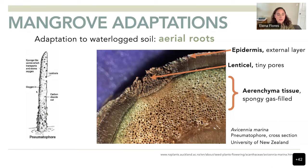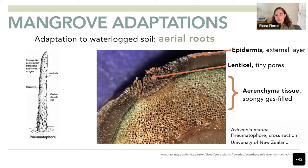If we cut the pneumatophore across, we have this cross section where the outside is the external layer called epidermis, and the cross section shows the lentils, which are the tiny pores where most of the gas exchange takes place. All of that inner area is known as aerenchyma tissue — a spongy gas-filled tissue that allows gas to travel in and out of the plant.